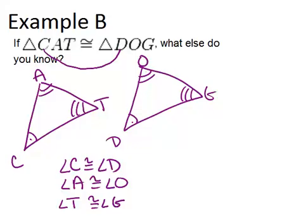We also know something about the side lengths, because the corresponding side lengths also have to be congruent. CA will have to be congruent to DO, because those are the sides in between the 1 and 2 angle markings. So CA is congruent to DO.